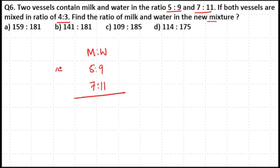Here, 5 plus 9 equals 14 parts, 11 plus 7 equals 18 parts, and both vessels are mixed in a ratio 4:3. So multiply the first ratio with 4, the second ratio with 3.